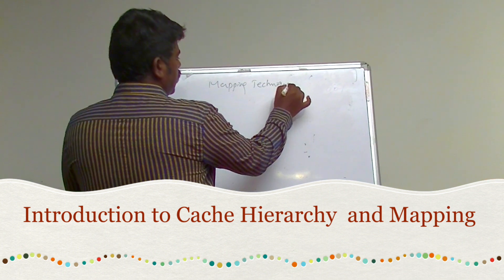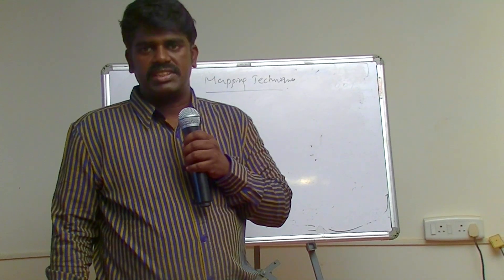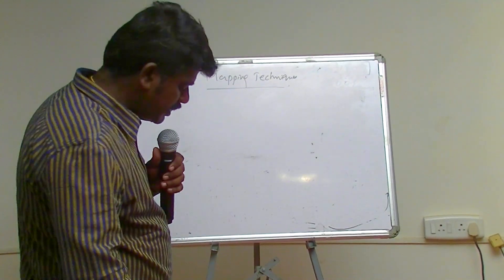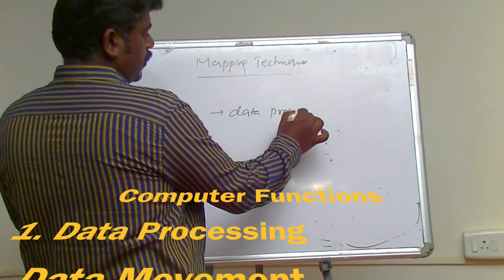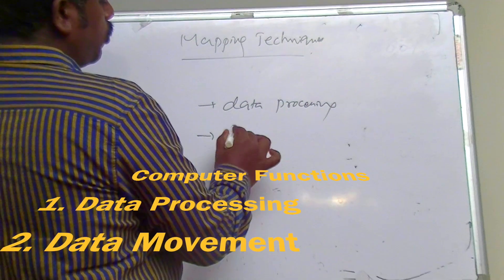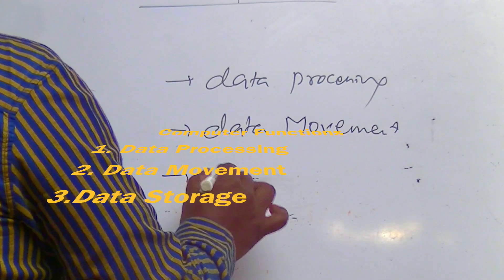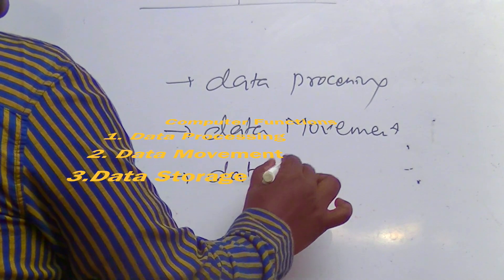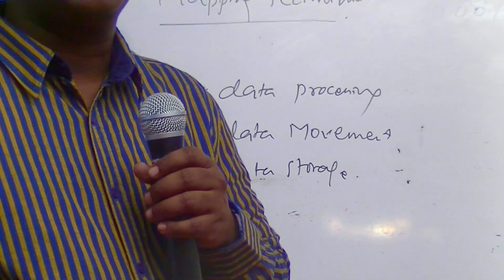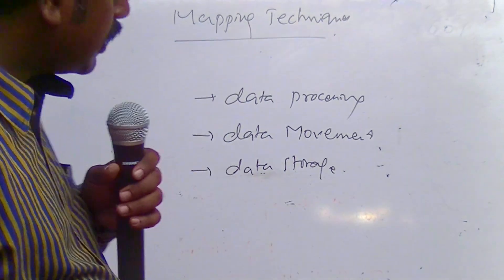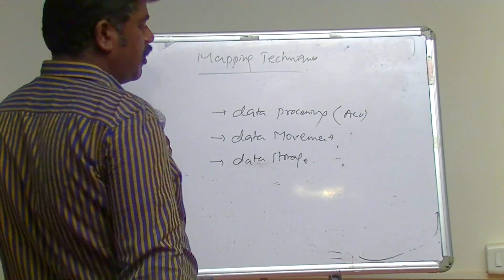In computer architecture, there are three important computer functions: data processing, data movement, and data storage. These are the three important computer functions dealt with in computer architecture. Data processing will be done by the ALU, and we will see about the ALU sections.